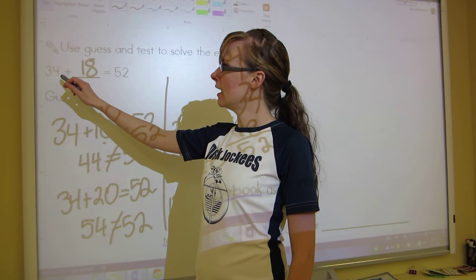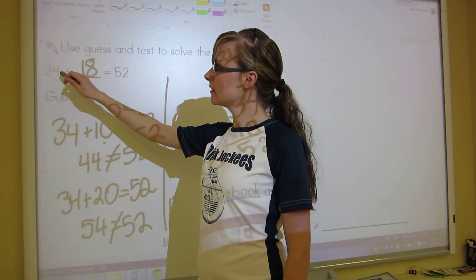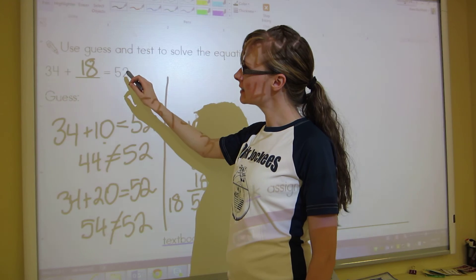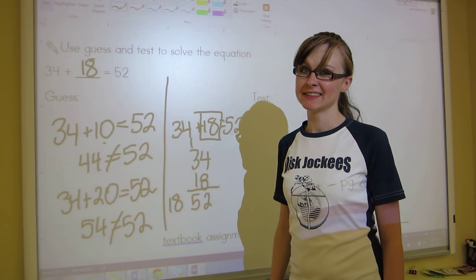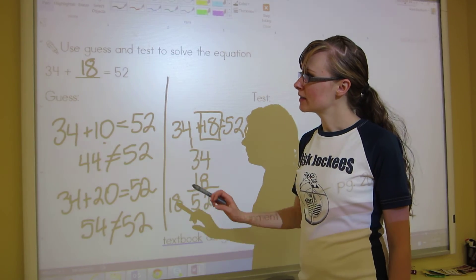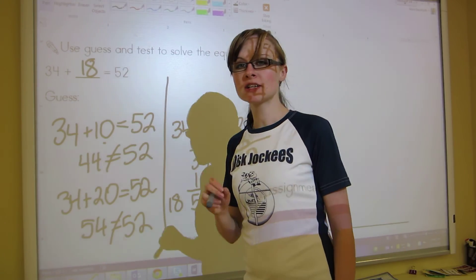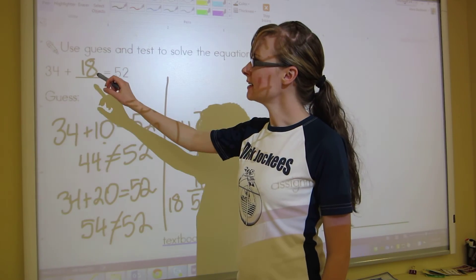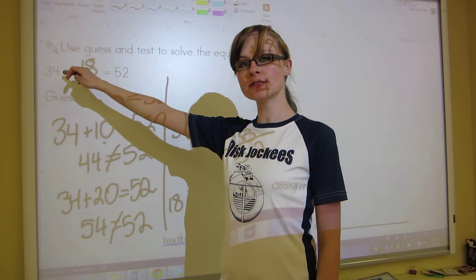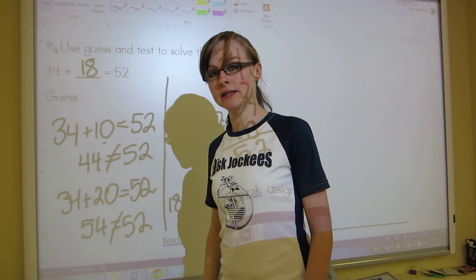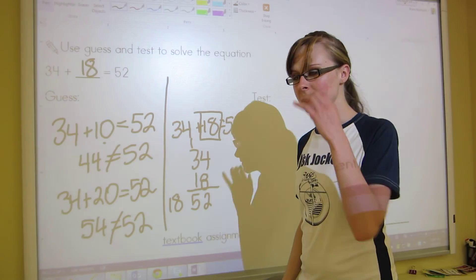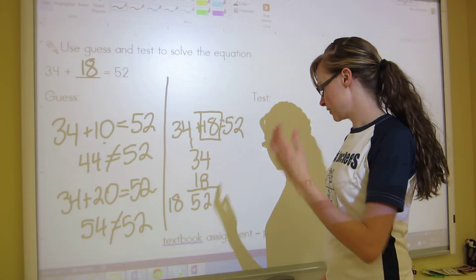And I'm going to tell you a secret. When I have a number right here, I could subtract it from 52 to find 18. Now it doesn't always work if we're doing subtraction, it changes it a little bit. But when it's adding, you can just subtract whatever number's on this side from the answer and you'll get the blank. So that's a little secret for you.